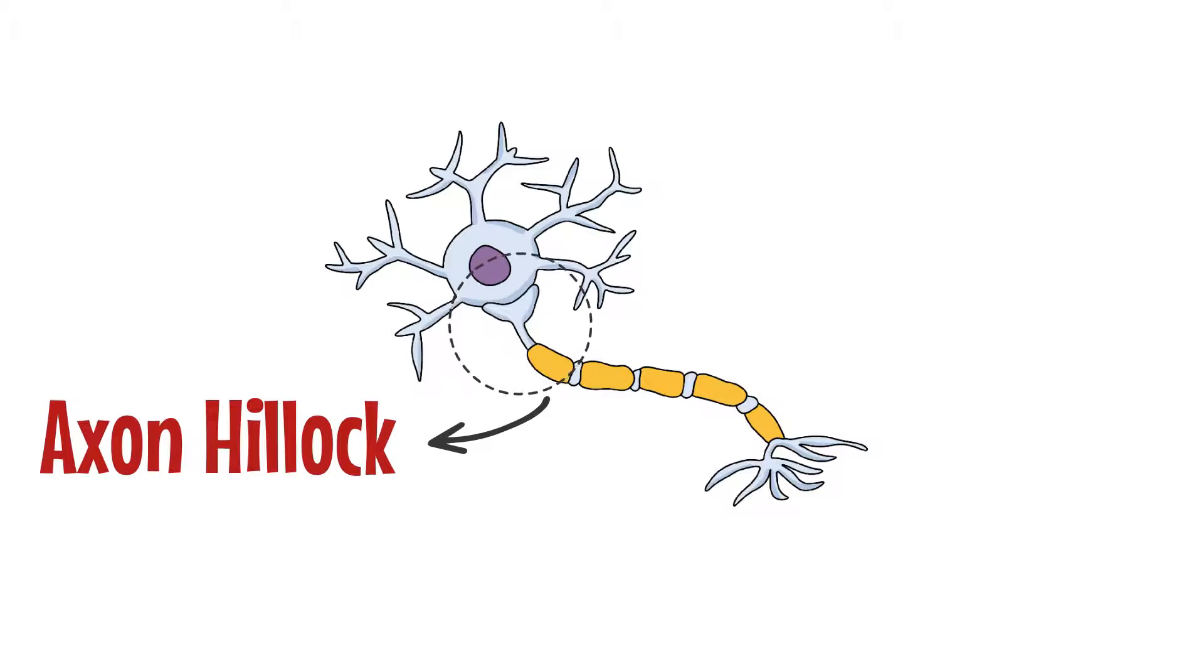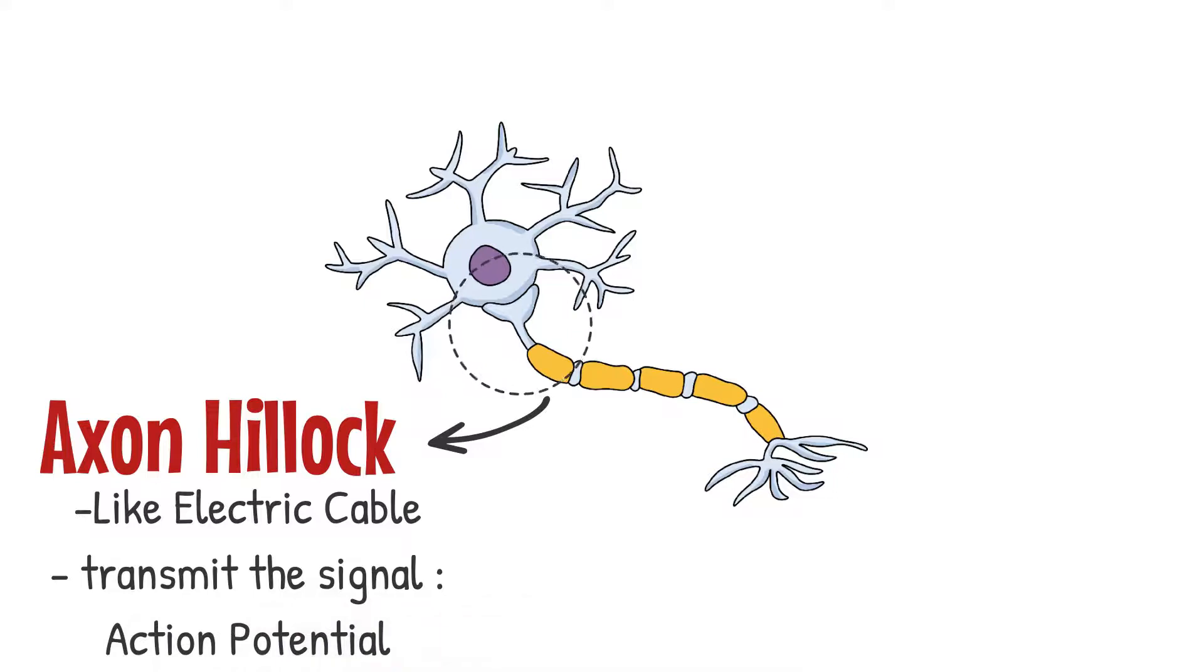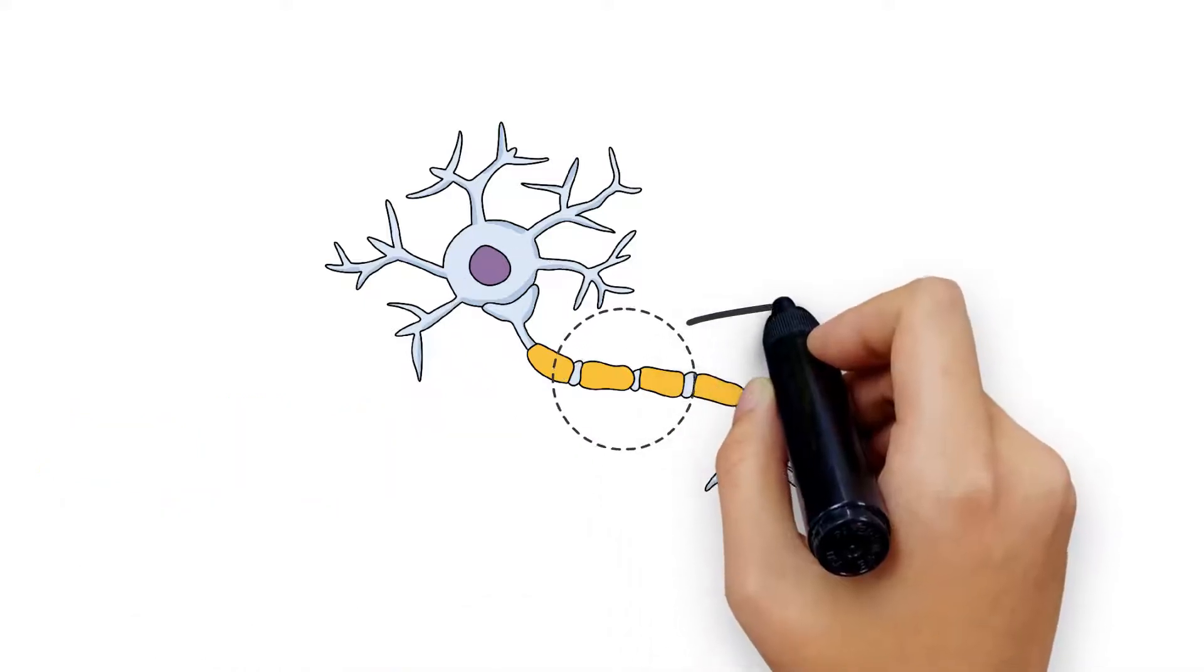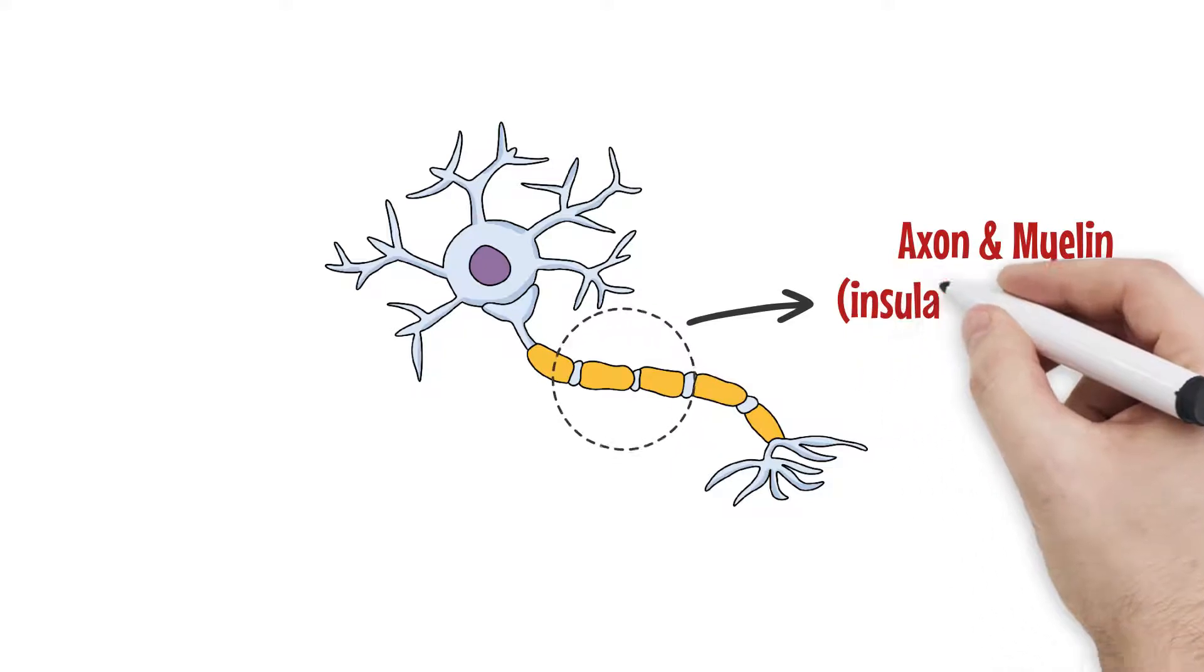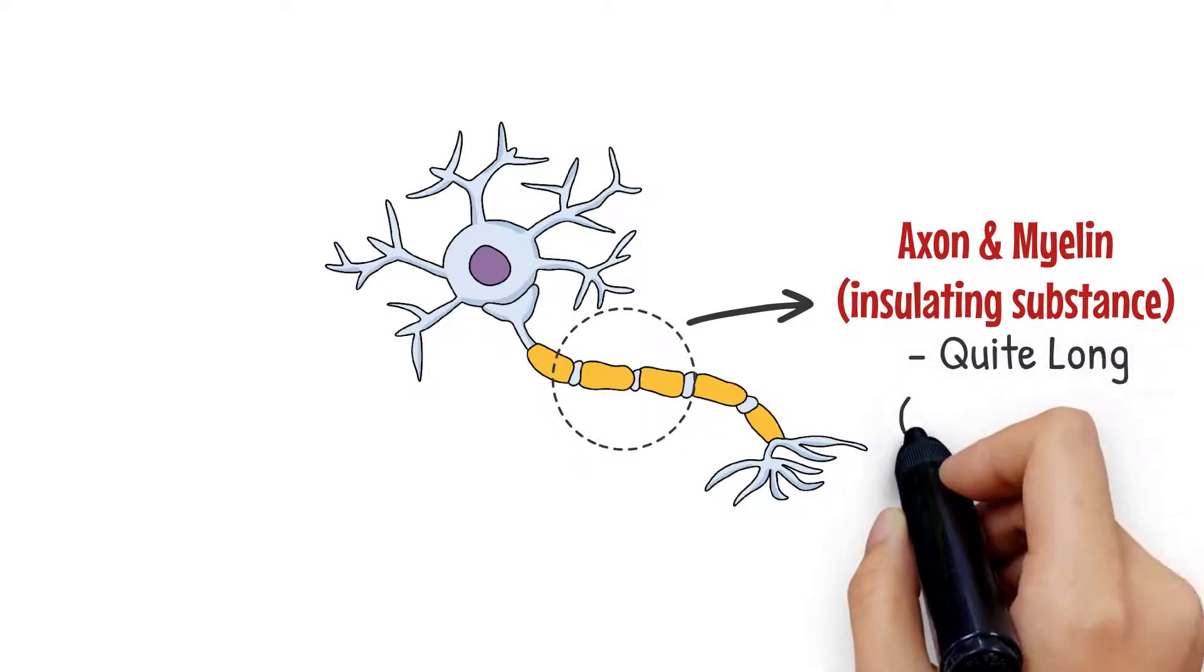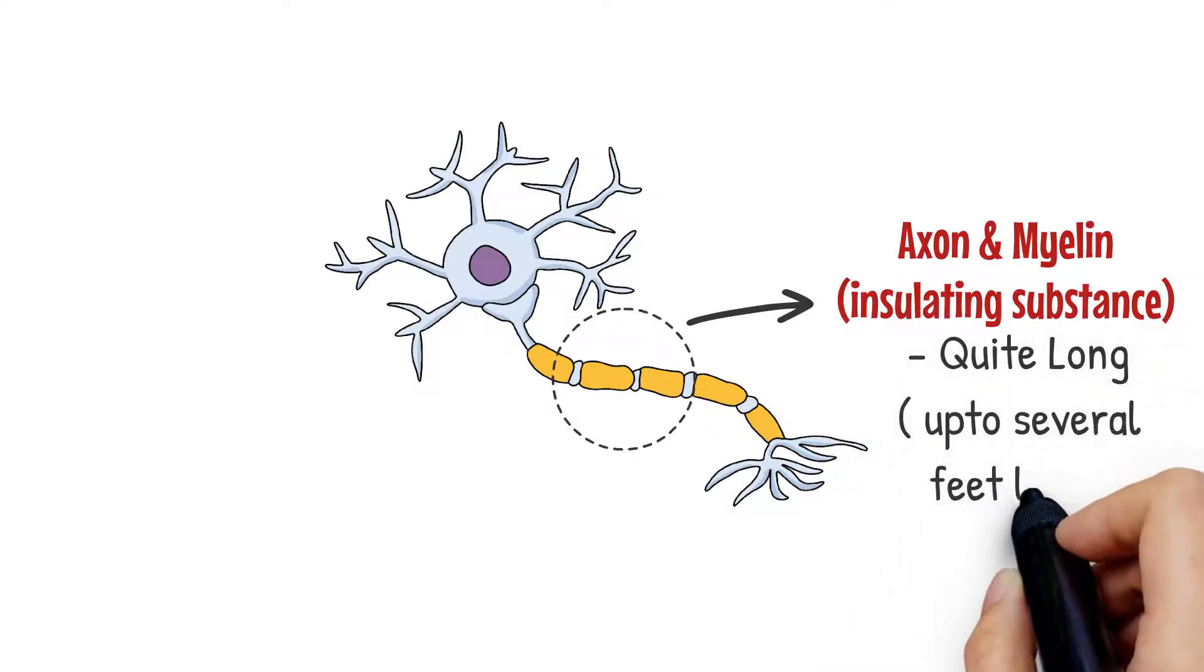The axon is like an electric cable. Its only job is to transmit the signal which is now called the action potential. The signal travels down the axon which is covered with an insulating substance called the myelin which keeps the action potential from degrading. The axons can be quite long. Some of them are even several feet long.